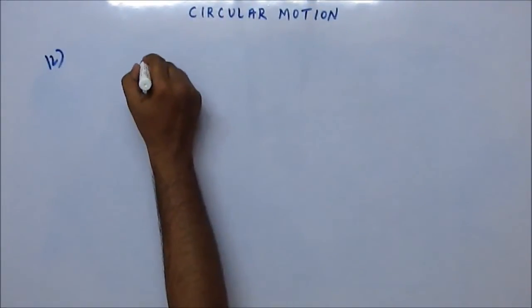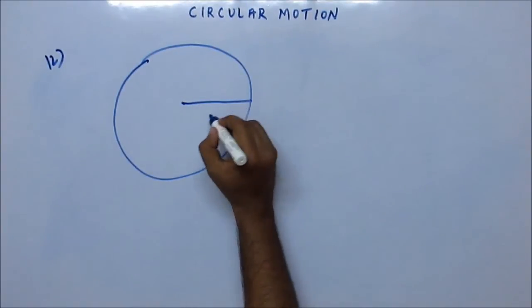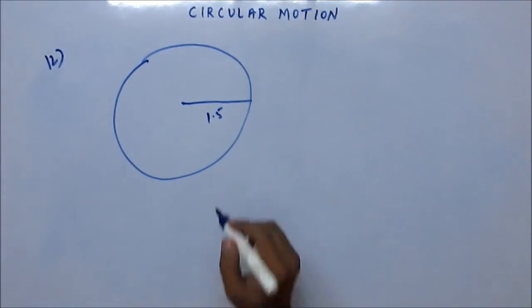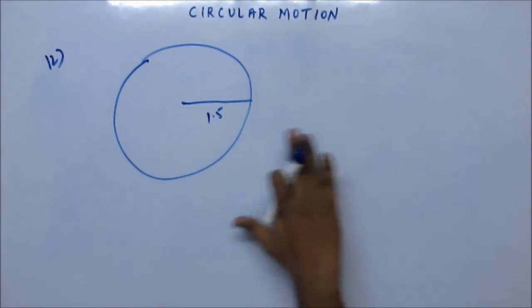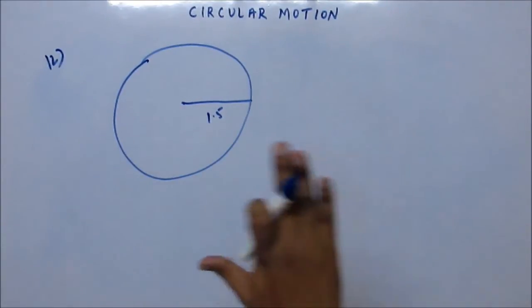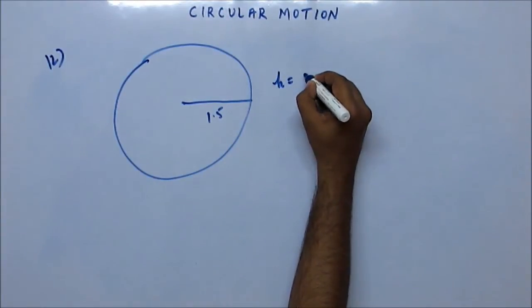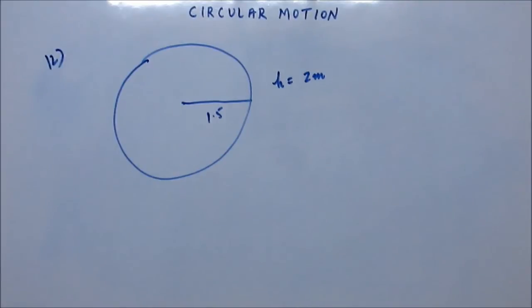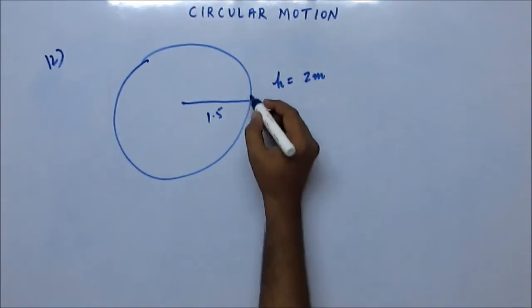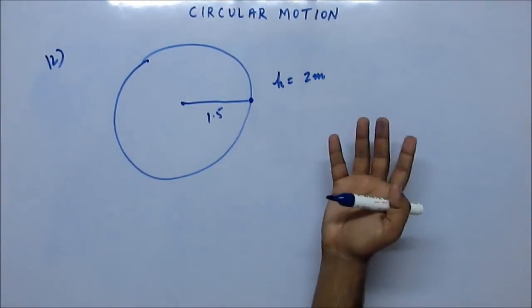Now, a particle is having a circular motion. The radius of the circle is 1.5 meters suppose. The motion is being done in a horizontal plane, and that horizontal plane is a lifted one. So the height of the horizontal plane in which the motion is happening, the height from the ground is suppose 2 meters. Now what happens is suddenly the string breaks. Suppose there is a particle tied to the string and it was having a horizontal motion, and suddenly the string breaks.